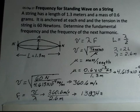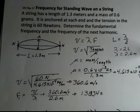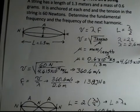And we can calculate the frequency because we know the speed of the wave and the wavelength. We find 138.7 hertz. And I didn't round off because I wanted to show the relationship to the next harmonic.